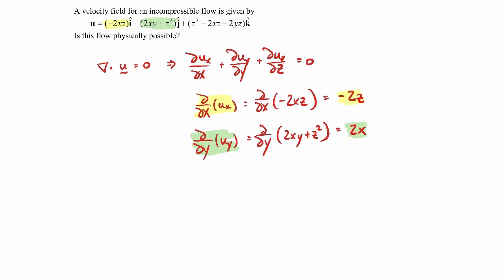And then the last term is the d/dz term. So that's d/dz of u sub z. That's d/dz of z squared minus 2xz minus 2yz. So that'll come out to be 2z minus 2x minus 2y.